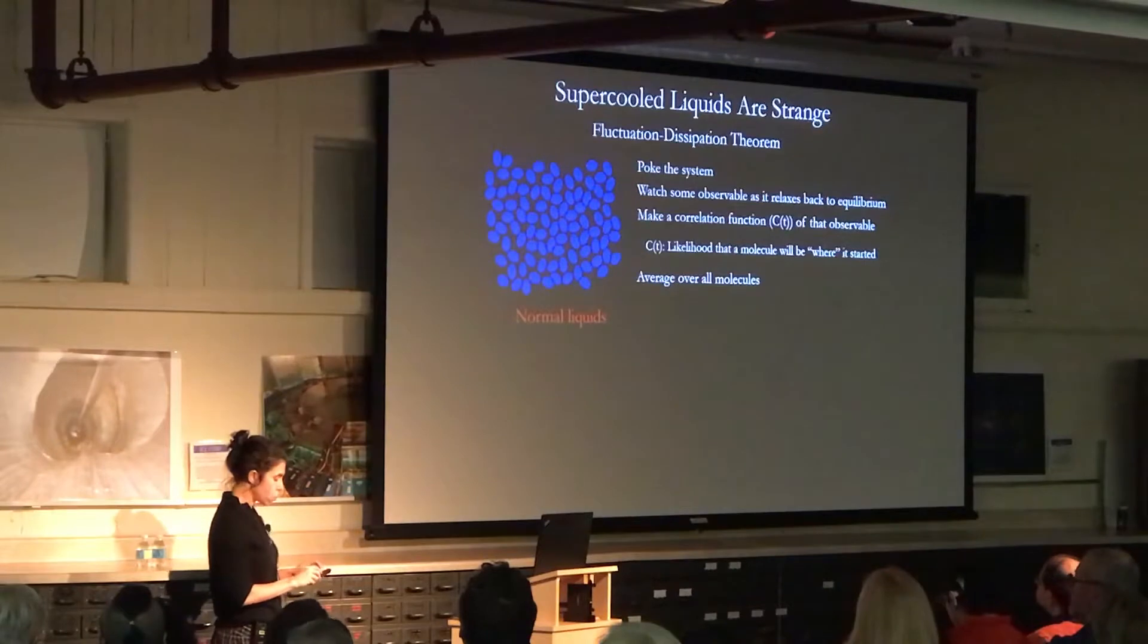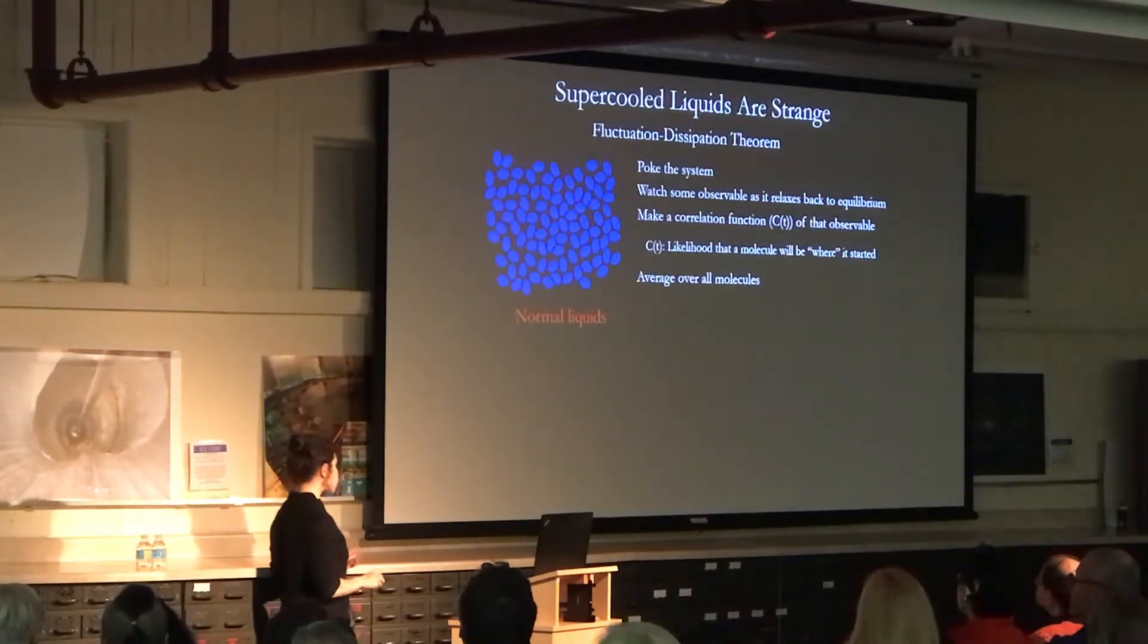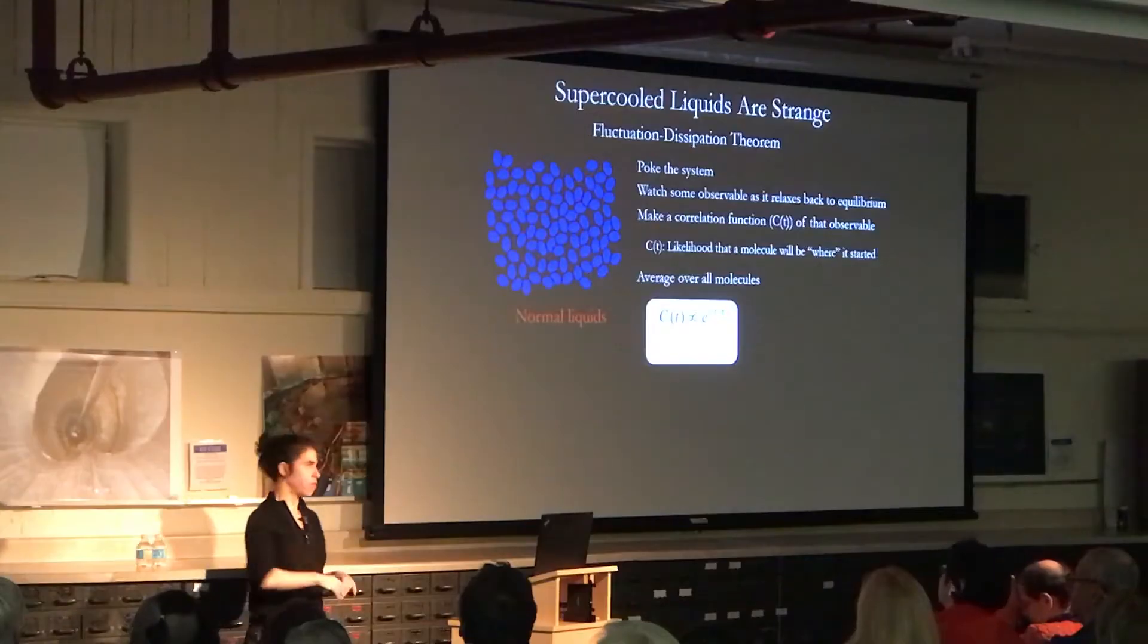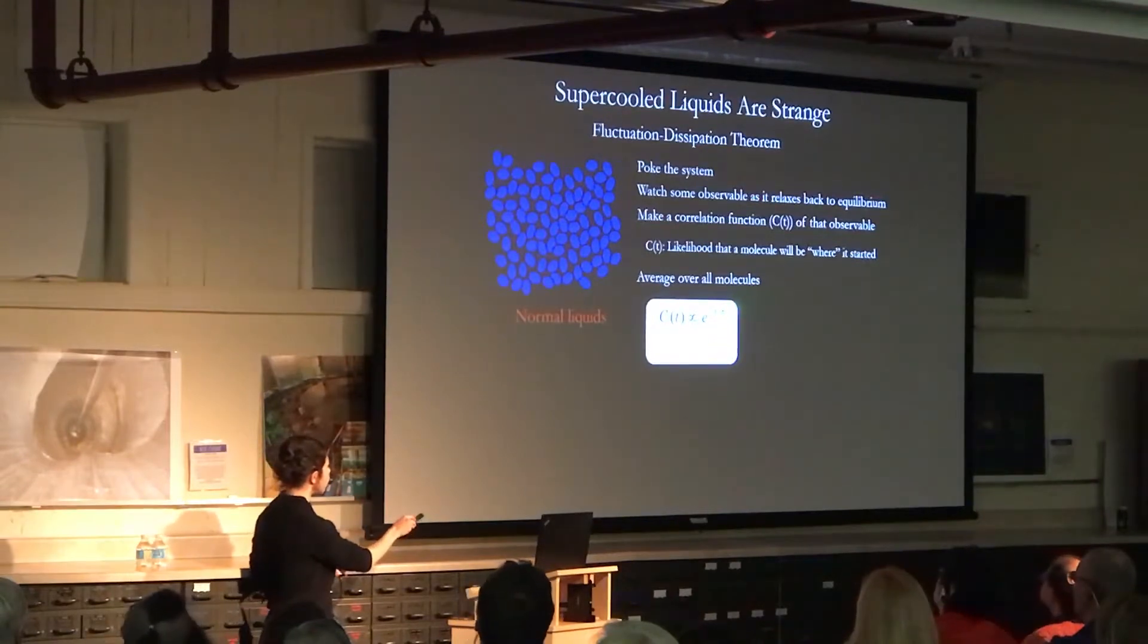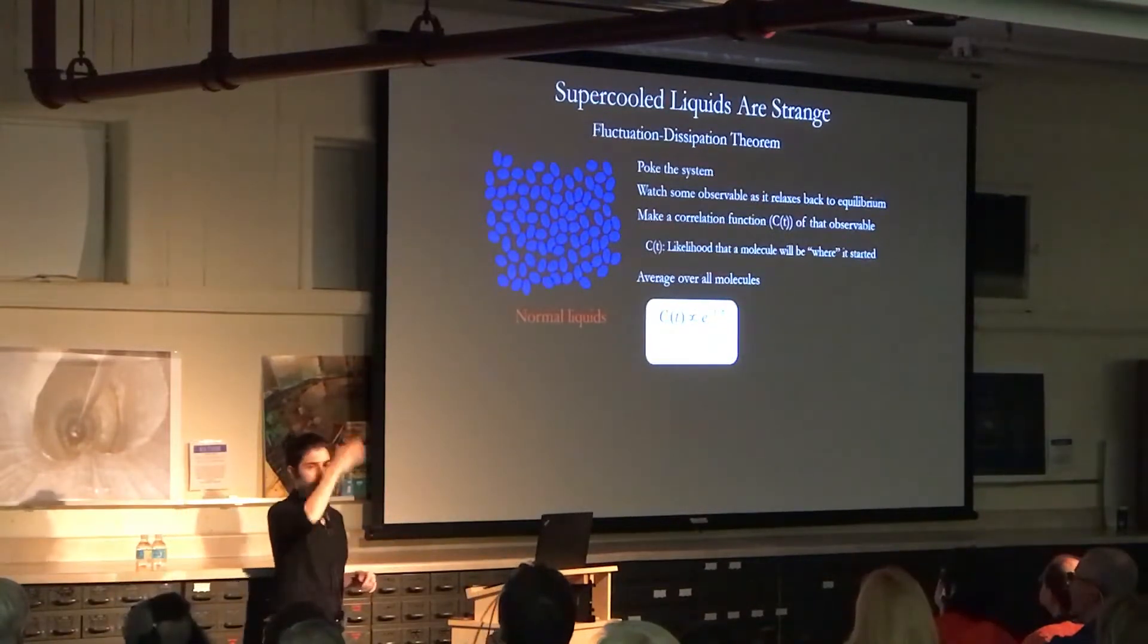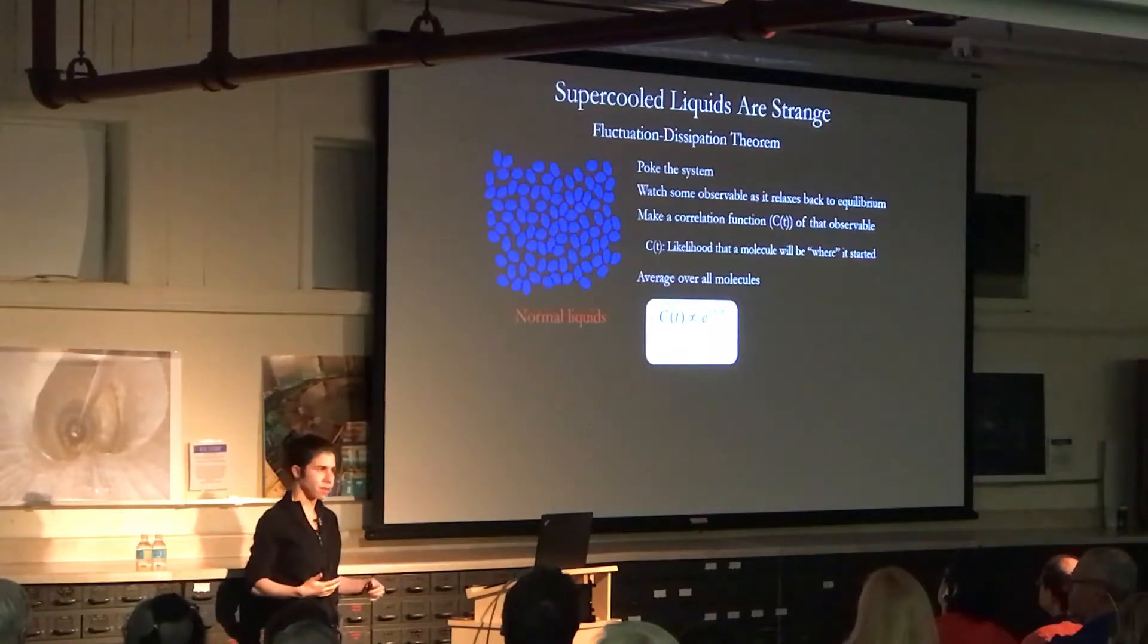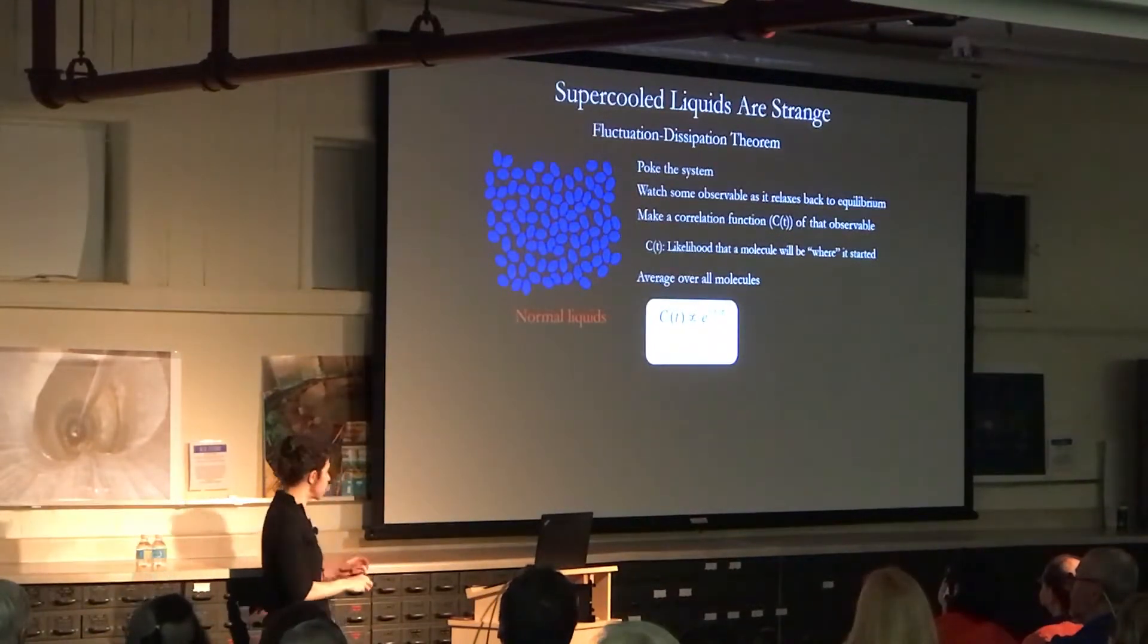So either way, we poke it or we don't poke it, and we watch it. If it's a normal liquid, we plot this correlation function, and we learn that it follows this decay curve, an exponential decay. And it's got this little thing tau, a single time constant. So the idea is that there's some single underlying process governing the relaxation of the system.